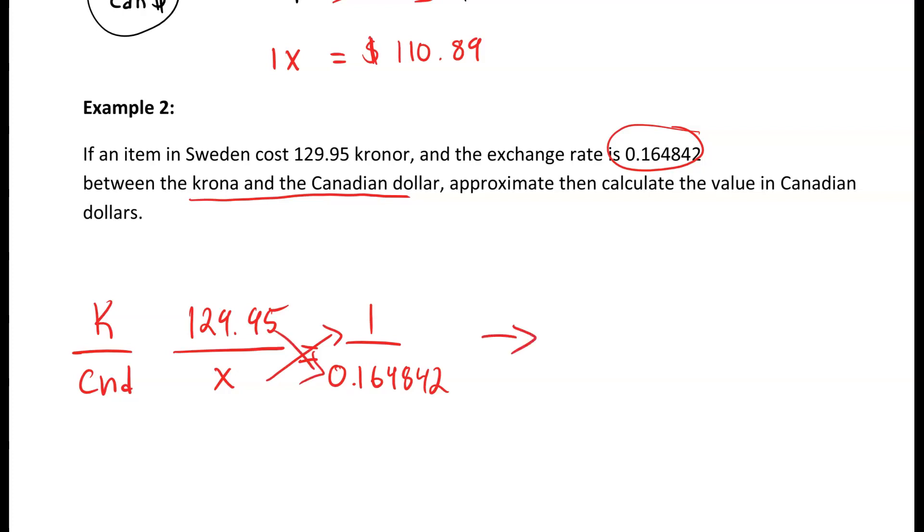That will give us 1x equals 129.95 multiplied by 0.164842, which will give us a dollar amount in Canadian of $21.42. Remember to write your unit down.